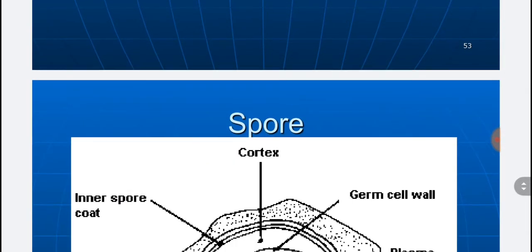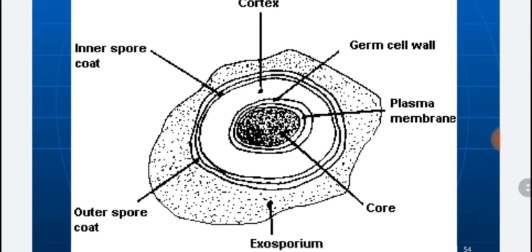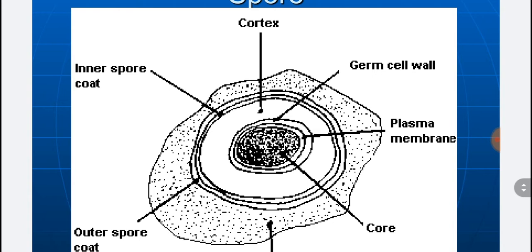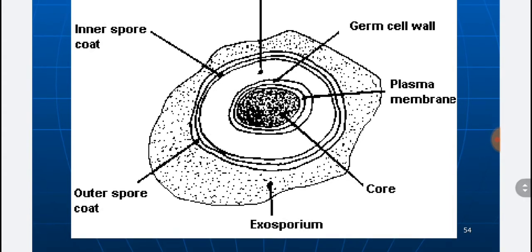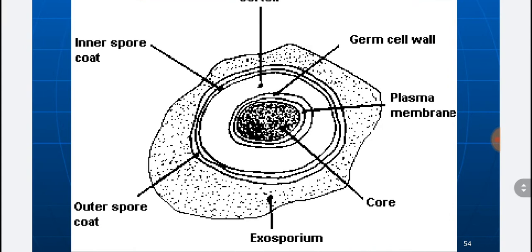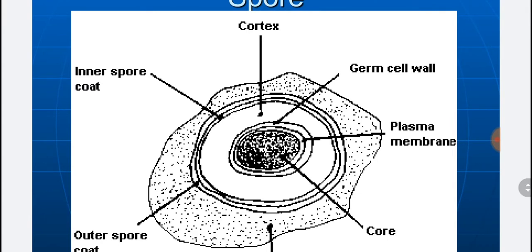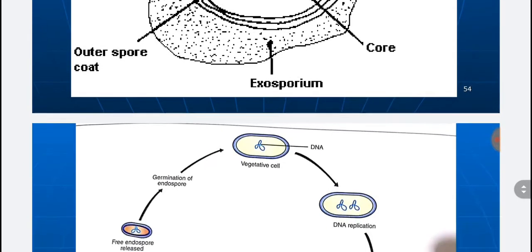The basic structure of a spore, as seen here: in the center there is a core, surrounded by a plasma membrane, then you have the cortex, which is surrounded by a coat having an inner coat and outer coat, and the outermost one is the exosporium.